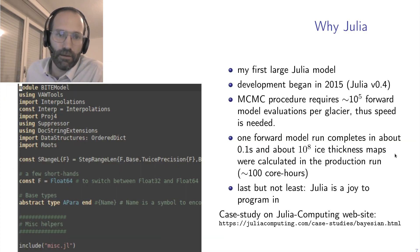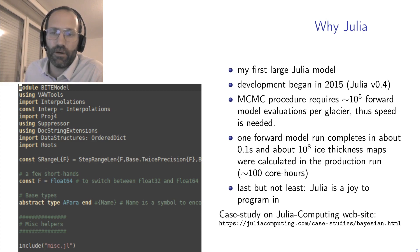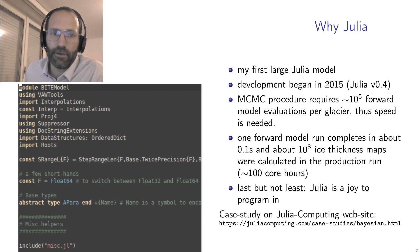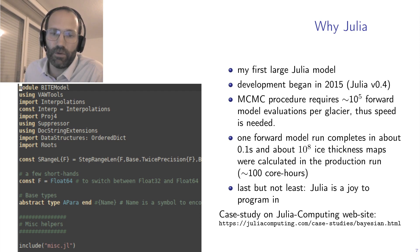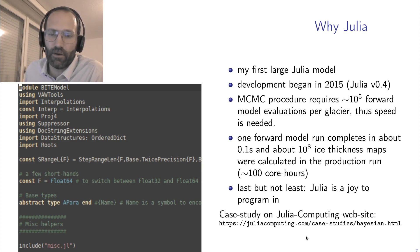So why Julia? This was my first large Julia model. Development began back in 2015 around Julia 0.4. One key case for using Julia here is performance: the MCMC procedure requires about 100,000 model evaluations for each glacier, putting us at about 100 million ice thickness maps calculated for the production run — about 100 core hours. It was important to have good speed, and Julia provides this. But last but not least, Julia is cool to program in, and there was actually a case study by Julia Computing on this project.